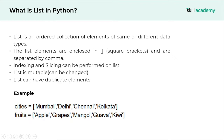List also happens to be mutable. Mutable means that list elements can be changed — we can add more elements, we can remove certain elements, and we can change the elements as well. List can also have duplicate elements; a list can bear multiple copies of the same element.